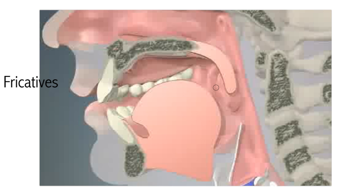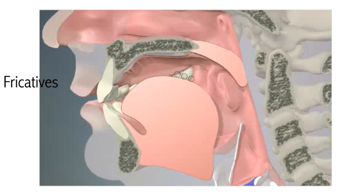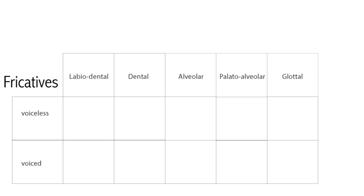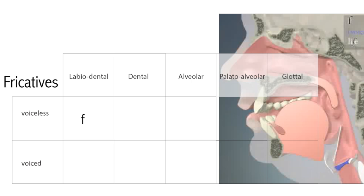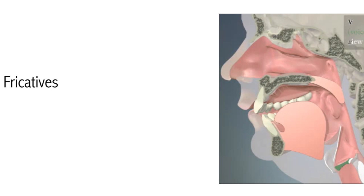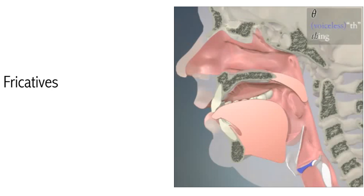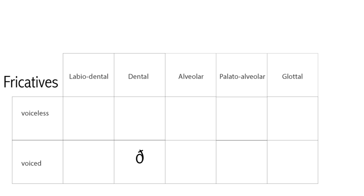Fricatives. Fricatives are made by bringing the articulators very close together but not close enough to block the air completely. Instead they form a narrow passage just wide enough for the air to be forced through, creating a hissing sound. English has quite a few fricatives at different places of articulation. F is a voiceless labiodental fricative. V is a voiced labiodental fricative. The first sound in 'three' is a voiceless dental fricative. The first sound in 'this' and 'that' is a voiced dental fricative.